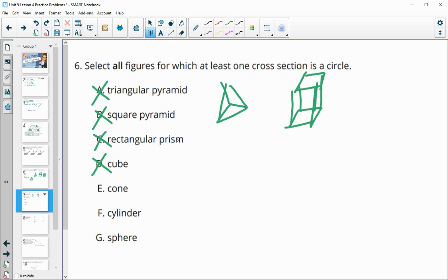Cube would be all squares. A cone has a circular base, so that one would be good. Cylinder has a circular base. And then sphere has circular cross sections around it for sure.